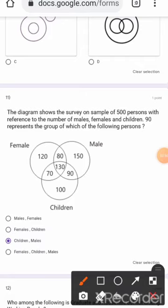The Venn diagram shows a survey of 500 people with reference to the number of males, females and children. 19 represents which group? Here 19 represents males and children's section.